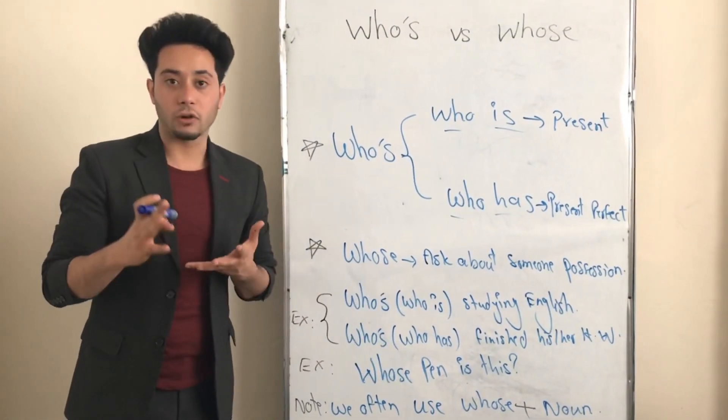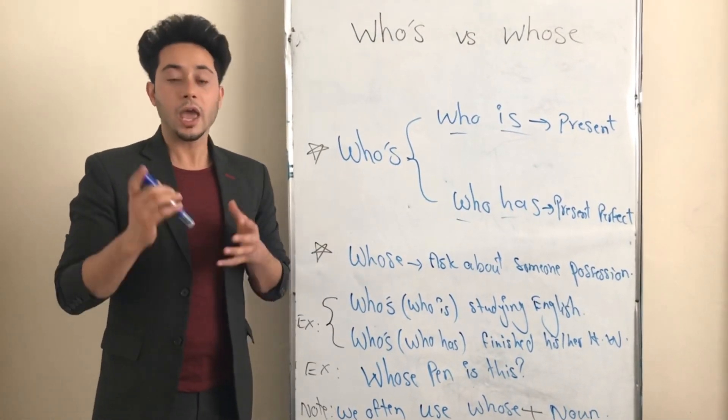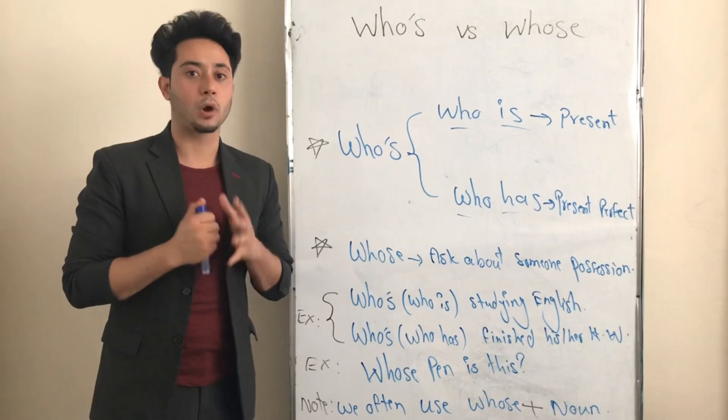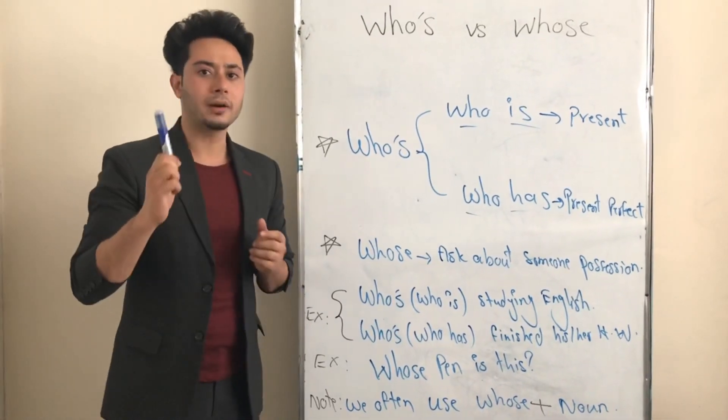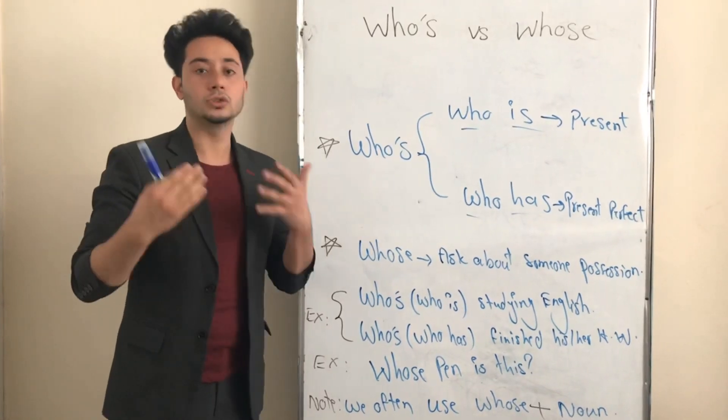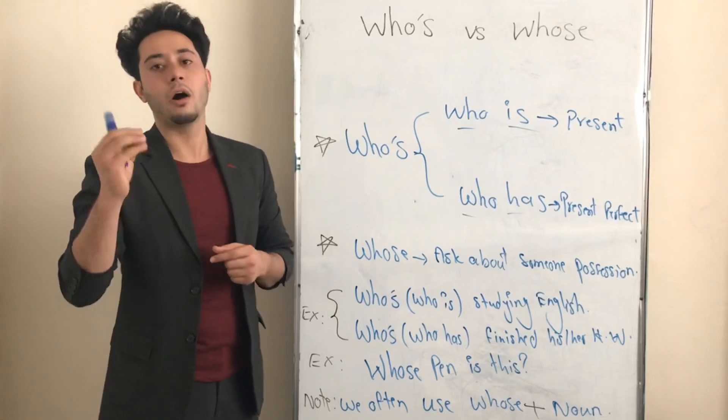My dear old friends, in using whose I want to mention a note. If you want to use whose properly, always try to use whose plus a noun. For example, whose marker is this? This is Rashid's marker. In the answer that you are going to give for whose, always try to use an apostrophe S after the name of the owner.